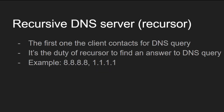The first component is the recursive DNS server, or recursor. This is the first point of contact from the client. For example, if you are using a web browser, the browser is the client and the first point of contact is the DNS recursive server. You may have configured in your network settings DNS recursors such as 8.8.8.8 or 1.1.1.1 — these are the IP addresses of DNS recursors. For every DNS request, the first request goes to the DNS recursor.